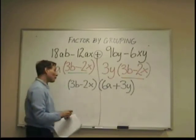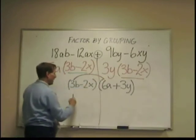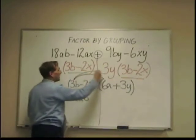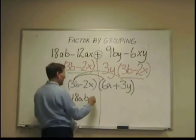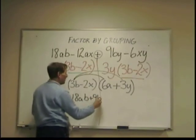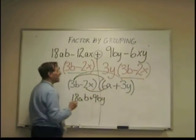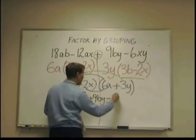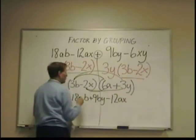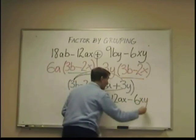Now, to check, we do our FOIL friend formula. Three b times six a would be eighteen a b. Three b times three y would be positive nine b y. Negative two x times six a is negative twelve a x. And negative two x times three y is negative six x y.